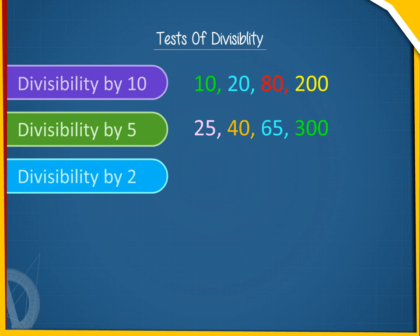3. Divisibility by 2. A number is divisible by 2 if the one's digit of the number is divisible by 2. For example, 4, 22, 86, 136.